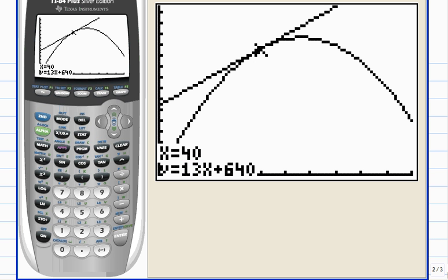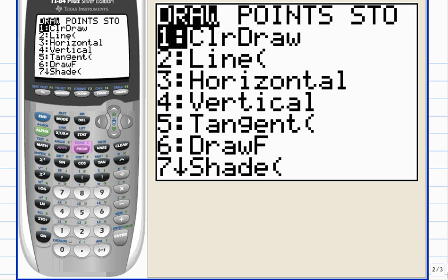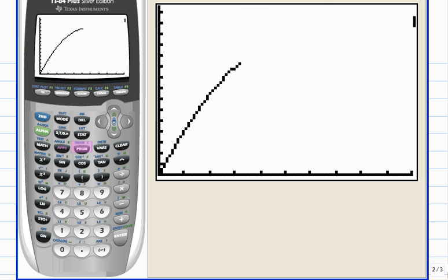So we get a nice visual of what the derivative is: the instantaneous rate of change or the slope of the curve at that specific point. To get rid of the equation, hit graph. To erase the tangent line, go back to the draw menu and choose number one, clear draw.